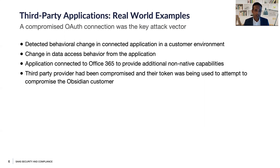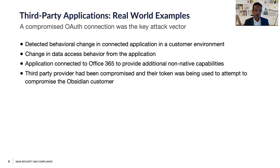A great example is the SolarWinds breach. The SolarWinds attack resulted in an enterprise finding the attacker in Office 365. The way it happened is that Mimecast got breached, which had integration into Office 365, and the attacker was able to use the auth tokens within Mimecast to get into Office 365. We would be able to recognize that.